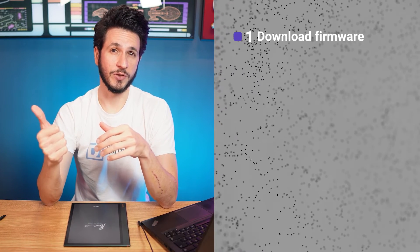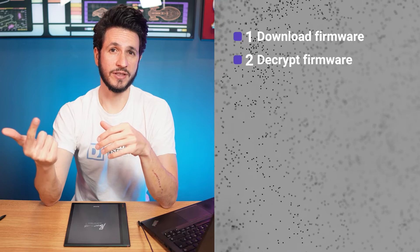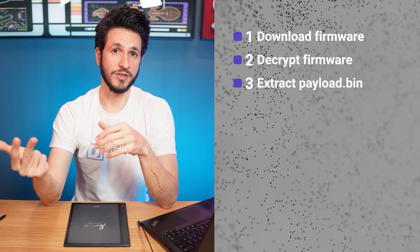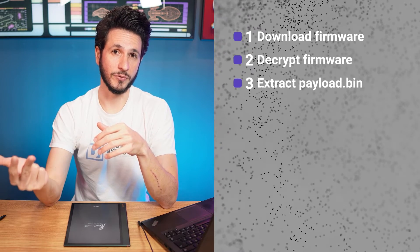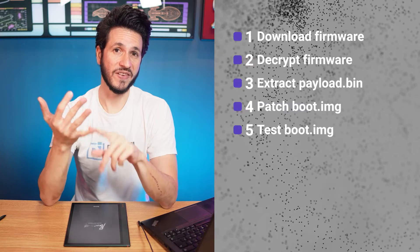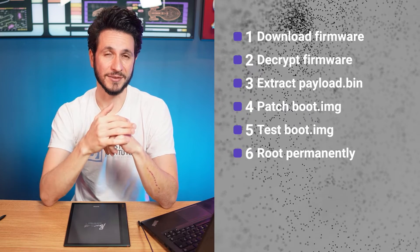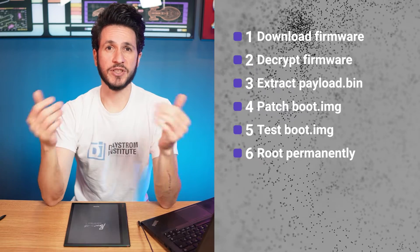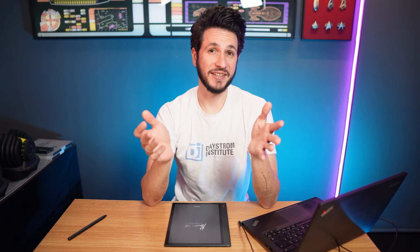To get root access we need to perform the following steps: download the latest firmware, decrypt the downloaded firmware, dump the contents of the decrypted firmware, patch the boot image, test the boot image, and permanently root the device. All of these steps can be done on Windows and Linux and are basically the same on both operating systems. I will explain how to do it on a Windows machine.